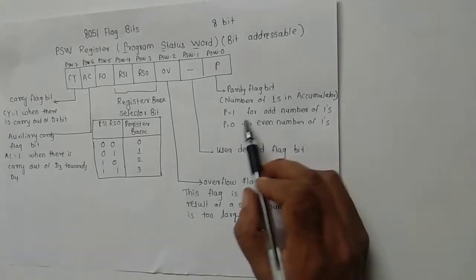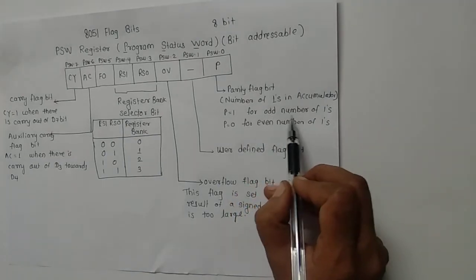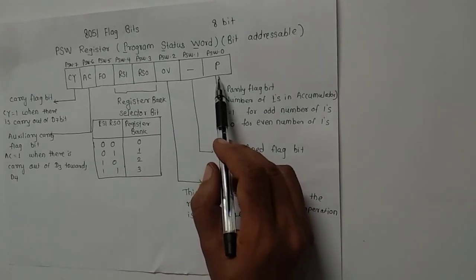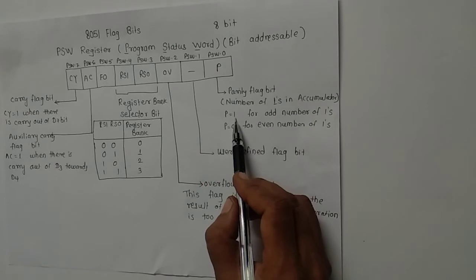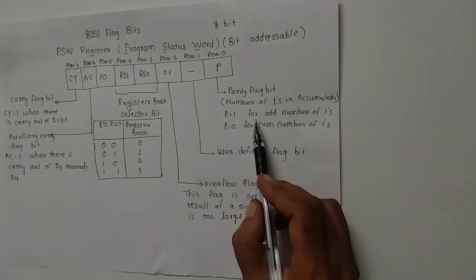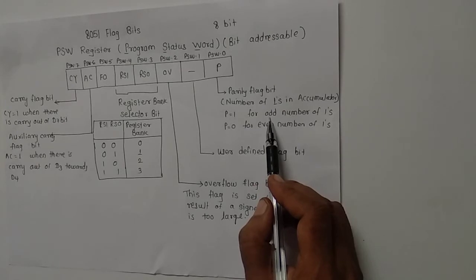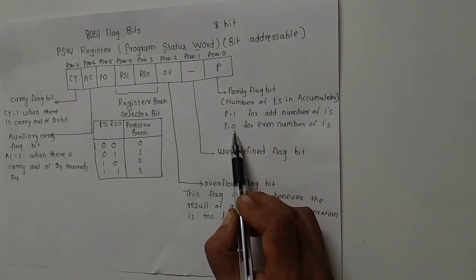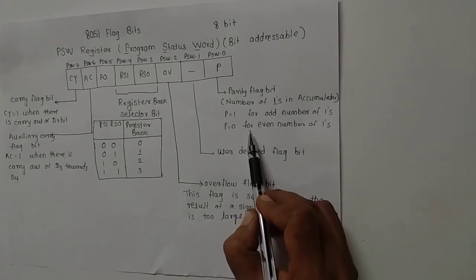We need to find out whether it is an odd number or even number. So by looking at this 0th bit, if it is 1, then the number of ones in the accumulator are odd. If that parity bit is 0, then the number of ones in the accumulator is even.